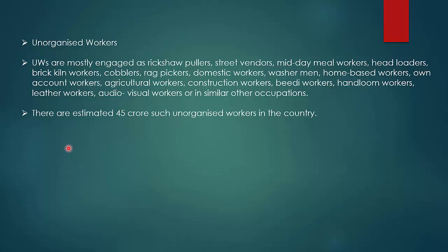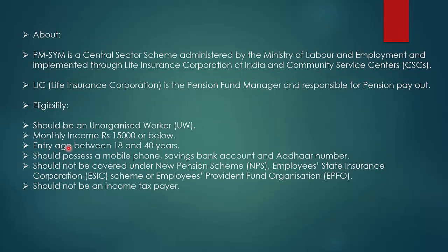There are an estimated 45 crore such unorganized workers in the country. Pradhan Mantri Shram Yogi Maanadhan Yojana is a central sector scheme — meaning the whole funding is provided by the central government. It is administered by the Ministry of Labour and Employment and implemented through the Life Insurance Corporation of India and Common Service Centres. LIC is the pension fund manager and responsible for pension payout.